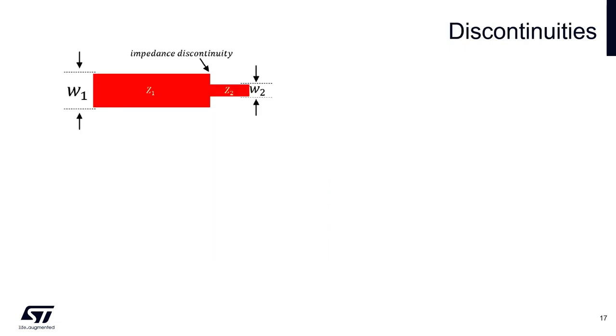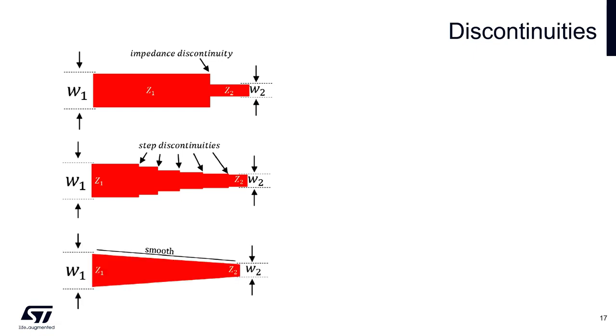Discontinuities occur when connecting parts with different characteristic impedance. This impedance mismatch causes a reflection of the transmitted RF power. Here we can see the example, where two transmission lines with different widths are connected. The difference between widths is quite big, and it causes the big discontinuity. A way to mitigate this problem is to use several smaller step discontinuities. The best way is to use a smooth transition between the transmission lines.